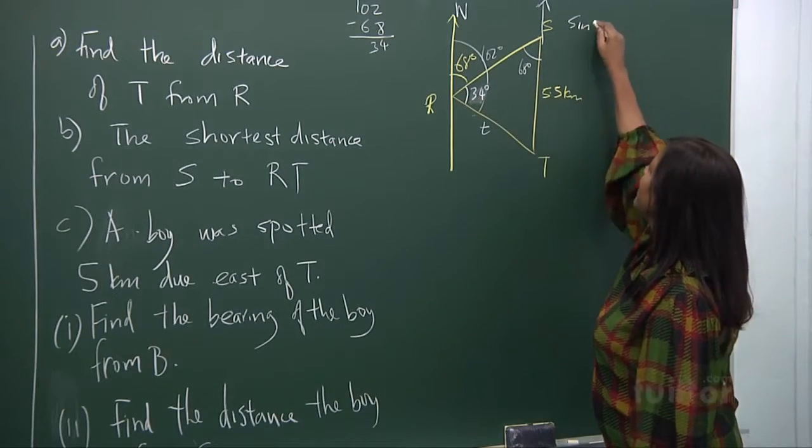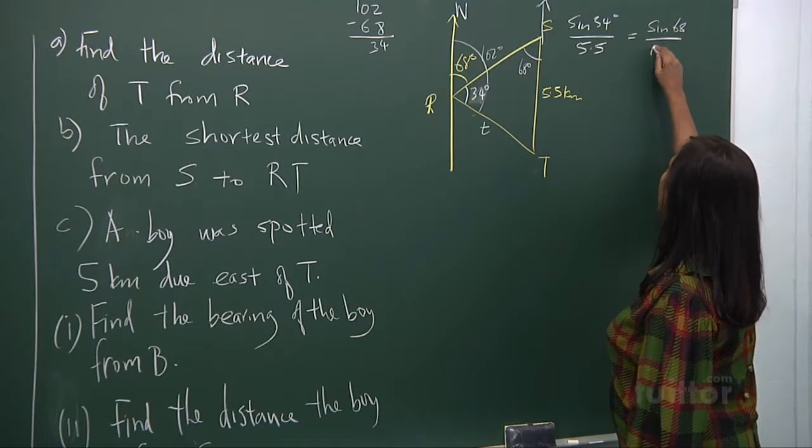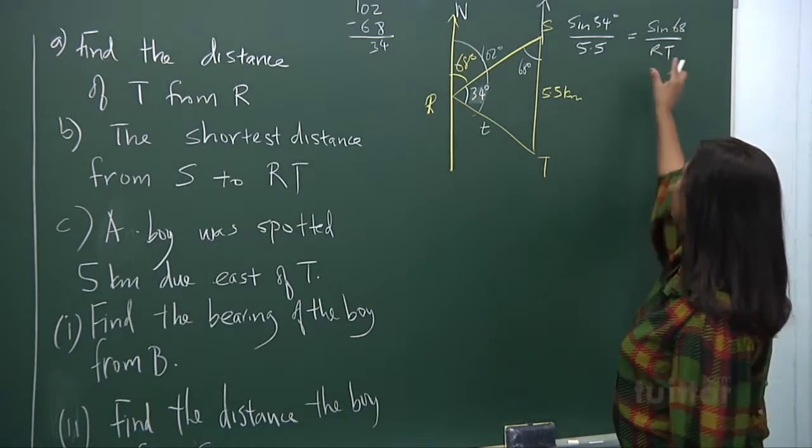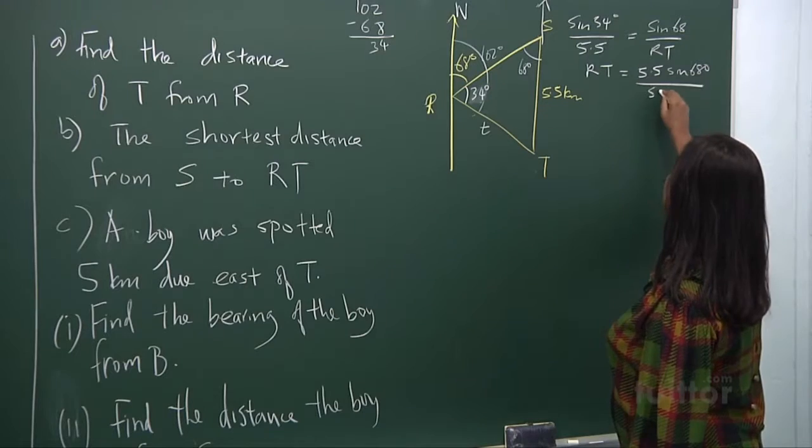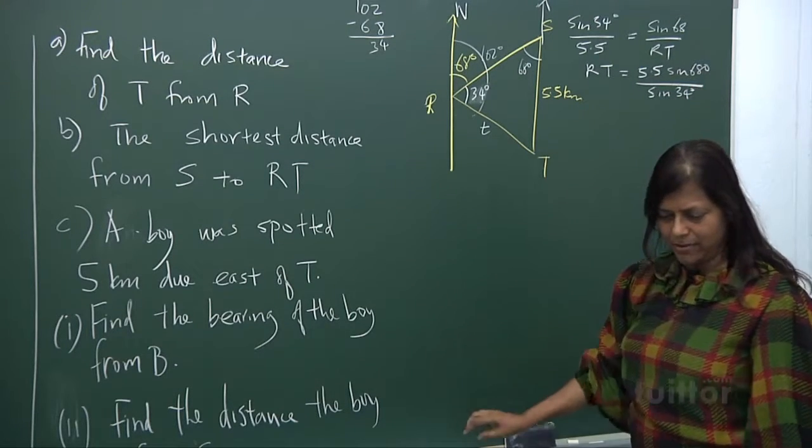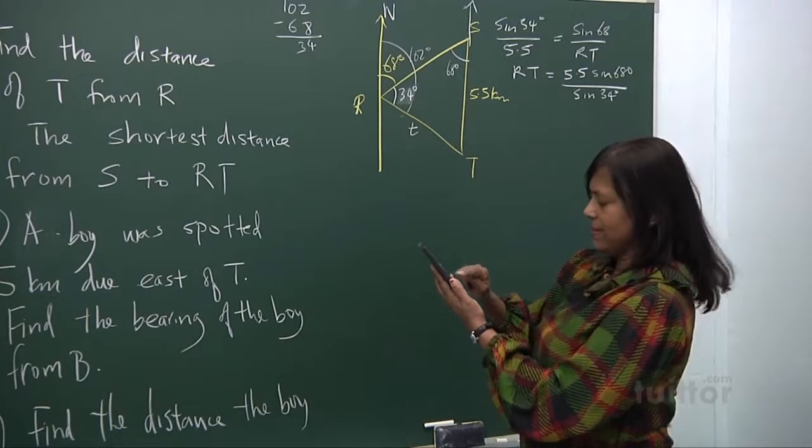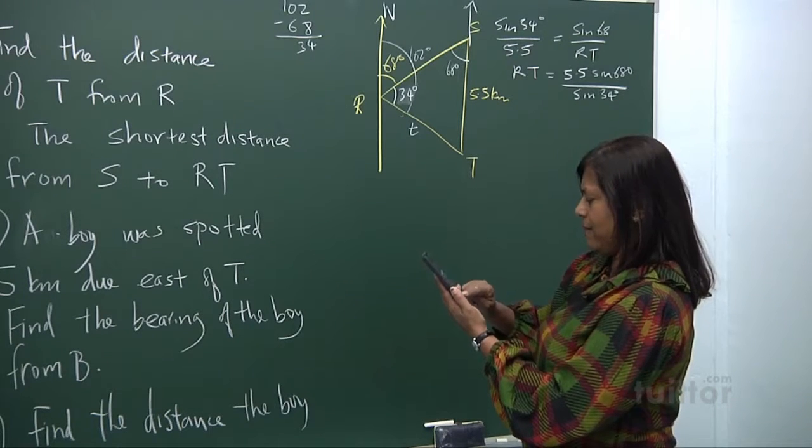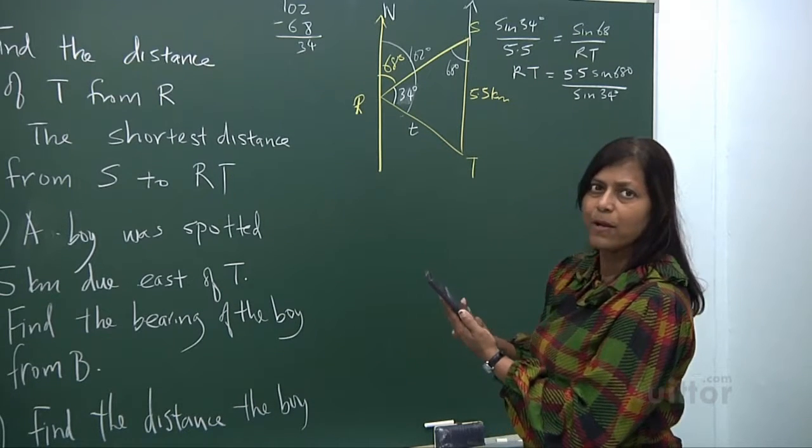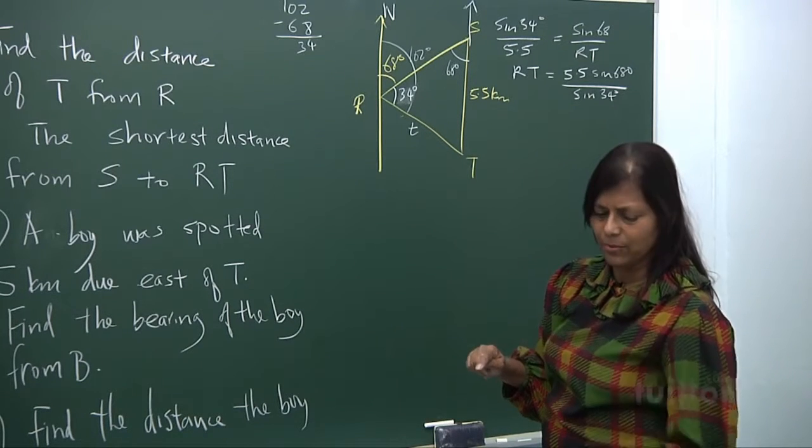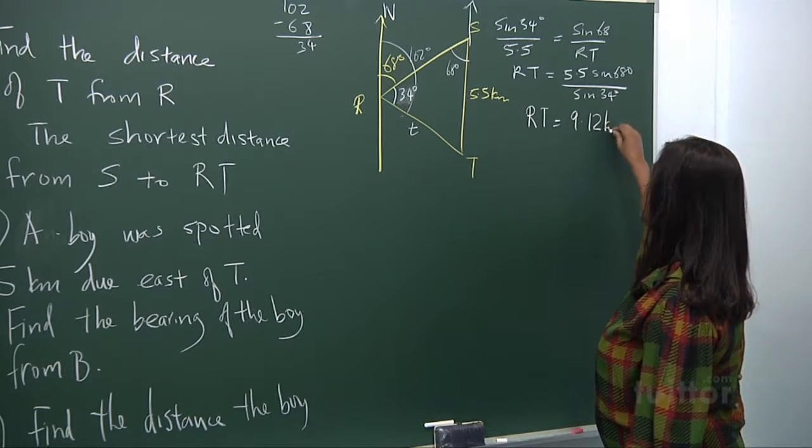So we say sine 34 degrees over 5.5 equals sine 68 degrees over RT, or you can call it T, small t I call it. You put your RT there. So what do you get here? 5.5 sine 68 degrees divided by sine 34 degrees. Now get your calculator. Now you get 9.119, 9.12. So your RT is 9.12 kilometers. That's your answer.